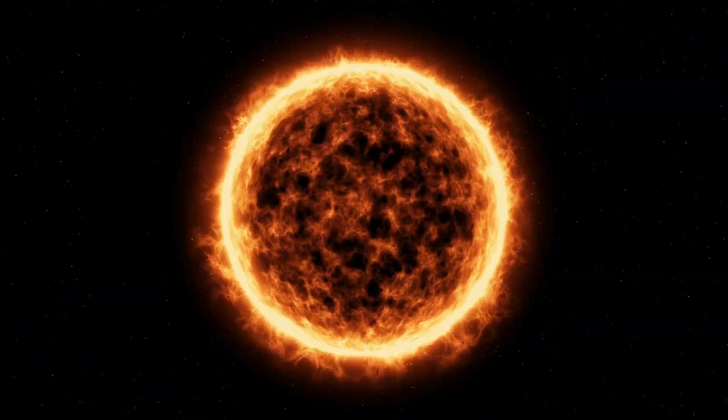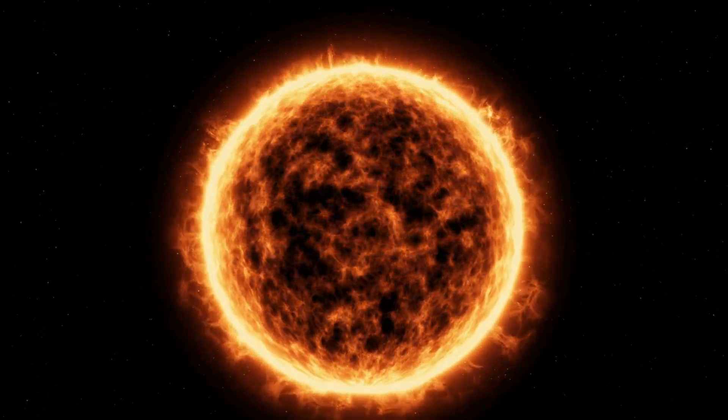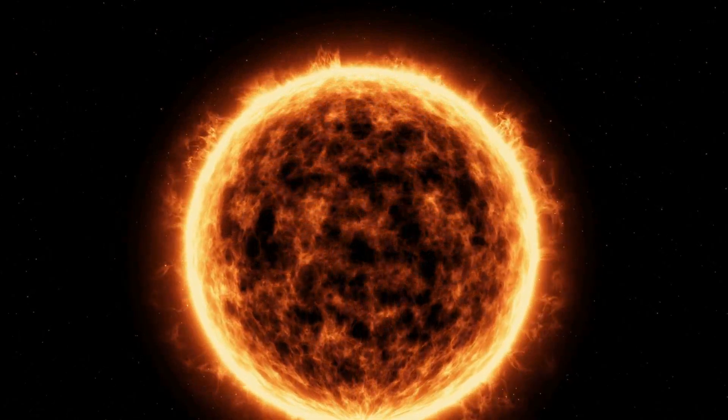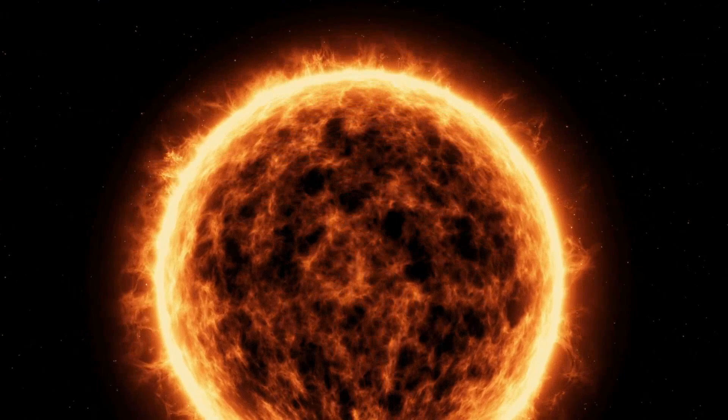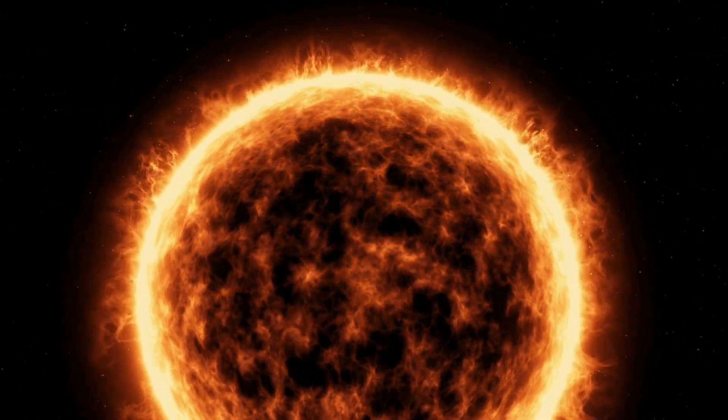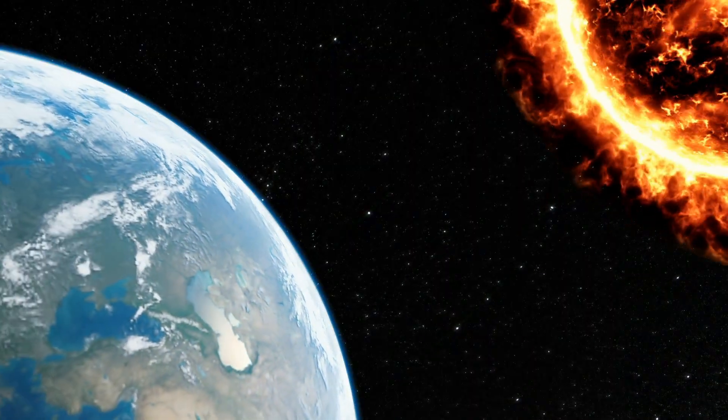In about 5 billion years, the Sun will exhaust its hydrogen fuel and evolve into a red giant, expanding and engulfing the inner planets, including Earth. This future evolution of the Sun is a natural part of its life cycle, highlighting the dynamic and ever-changing nature of our universe.